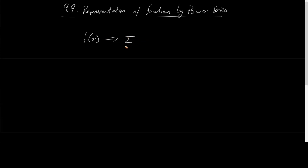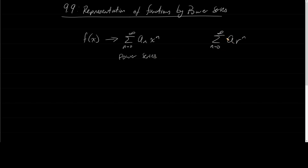What was the Power Series? The Power Series was the summation from n equals 0 to infinity of a sub n times x to the n. Let's compare this to the Geometric Series: the sum of a·r to the n. We know something about Geometric Series — these converge when the absolute value of r is between 0 and 1.